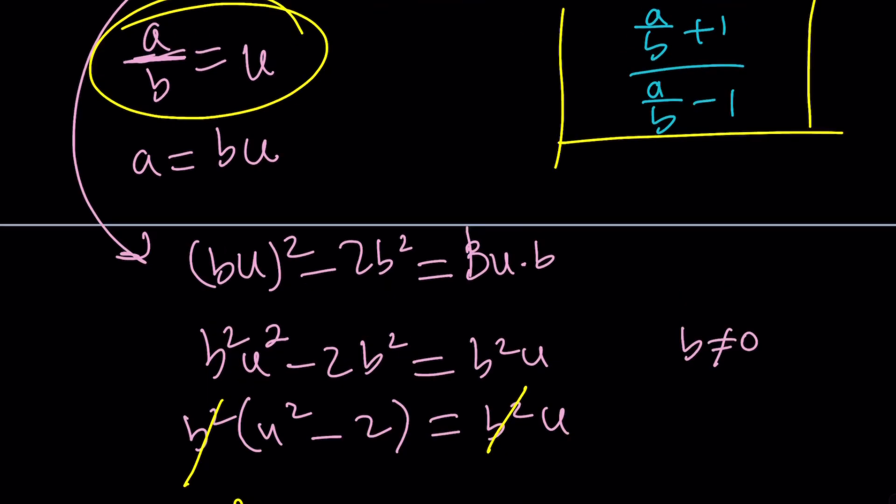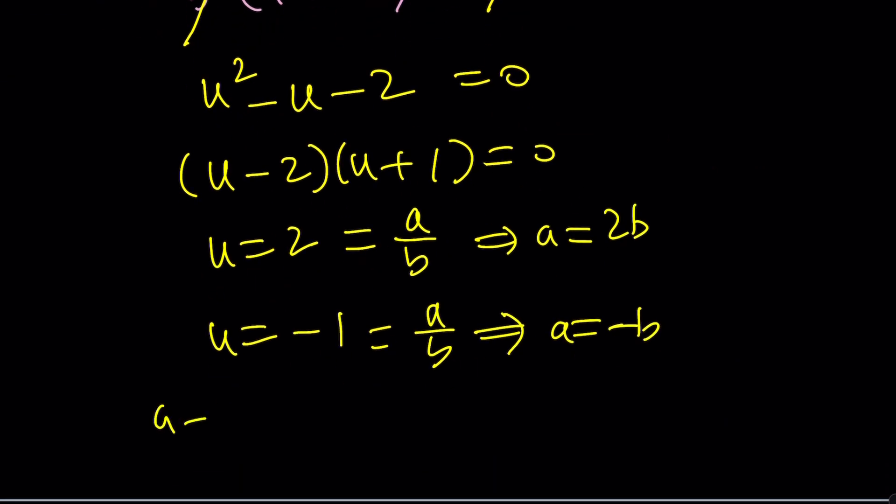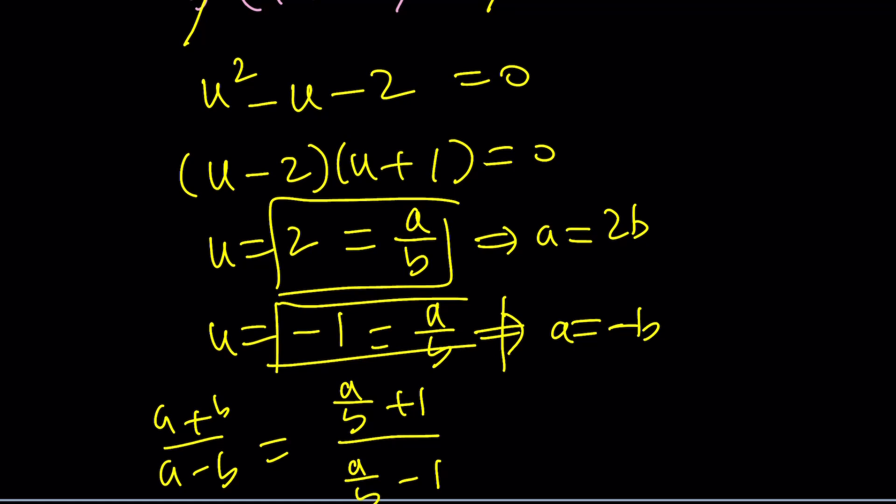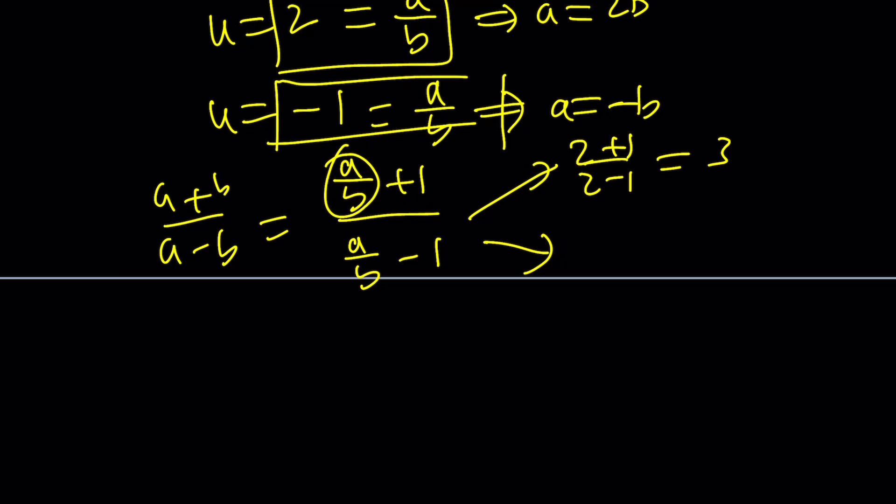Of course, now if you plug these in, because remember this was written as a over b plus 1 over a over b minus 1. By the way, you don't even need to find a in terms of b, because you could directly use the u values in this equation. For example, if a over b is 2, it's going to be 2 plus 1 over 2 minus 1, and that's going to be 3. If a over b is negative 1, that's going to be negative 1 plus 1 over negative 1 minus 1, which is 0 over negative 2. That's equal to 0. Again, we find the same answers for this problem.